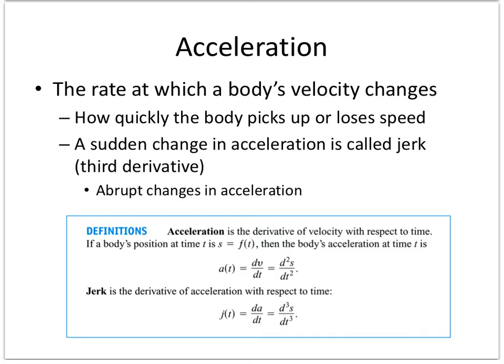The best example is a roller coaster: your function is your position — you get in the car and you haven't gone anywhere. Your velocity — you take off. Acceleration — you're slowing down and speeding up. The jerk is how they always stop the ride — it's never nice and smooth; it basically gives you whiplash. So if asked to find jerk, just keep finding the first, second, and third derivative.